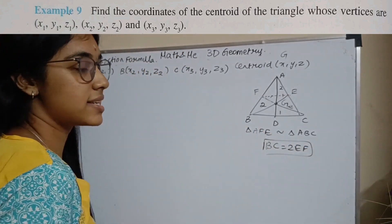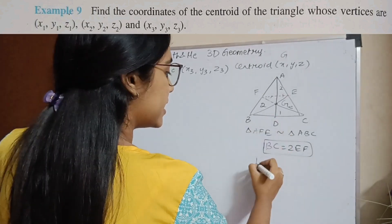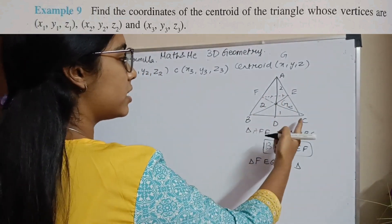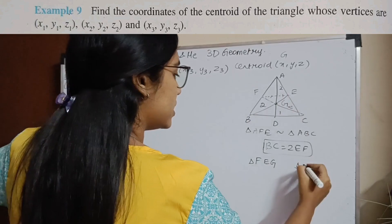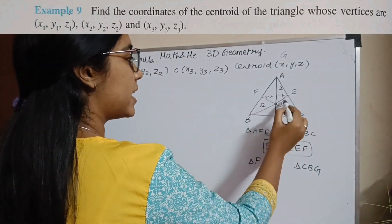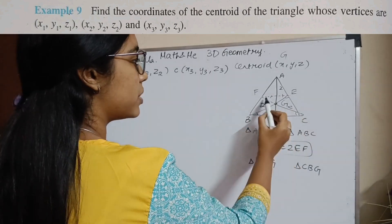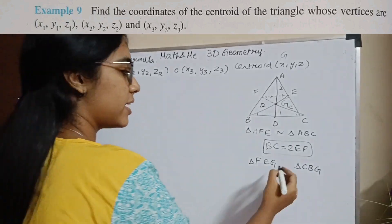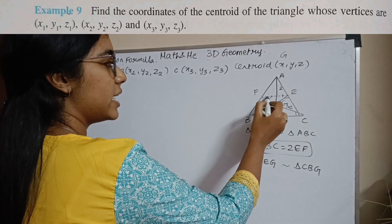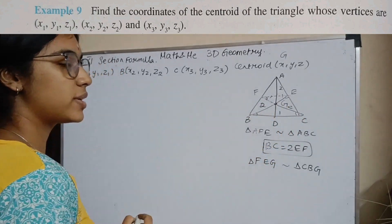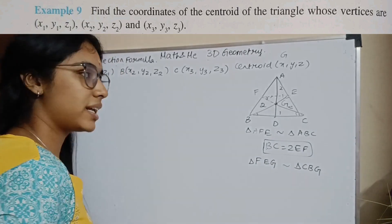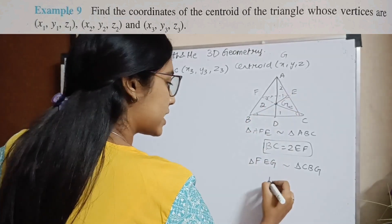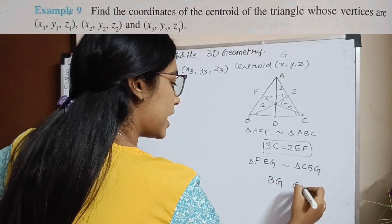Now taking triangles FEG and CBG, because these two alternate angles are equal and the other pair of alternate angles are equal, and we already know BC equals 2 times EF, triangles FEG and CBG are similar by the ASA property.